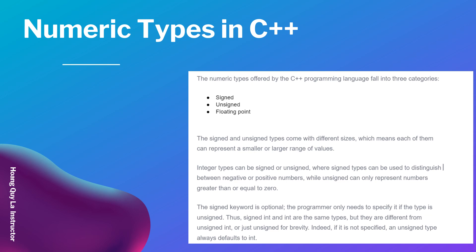The signed keyword is optional and the programmer only needs to specify it if the type is unsigned. Thus, signed int and int are the same types, but they are different from unsigned int or just unsigned. If it is not specified, an unsigned type always defaults to an integer.